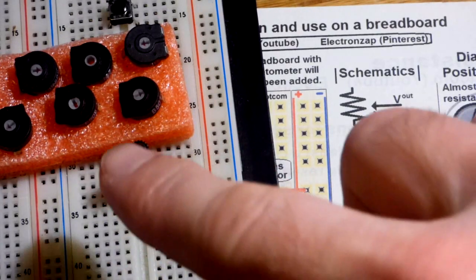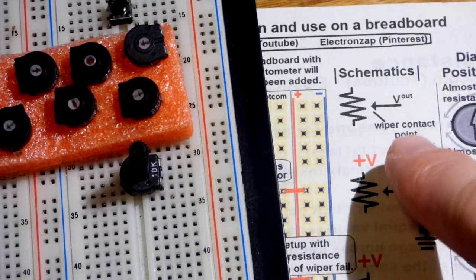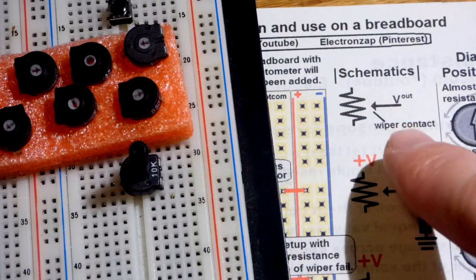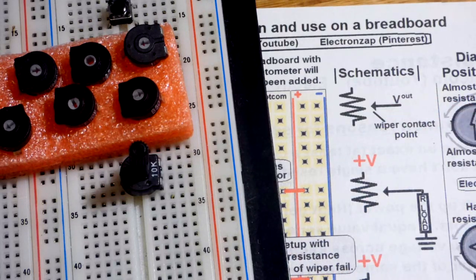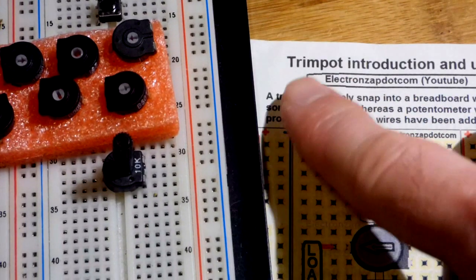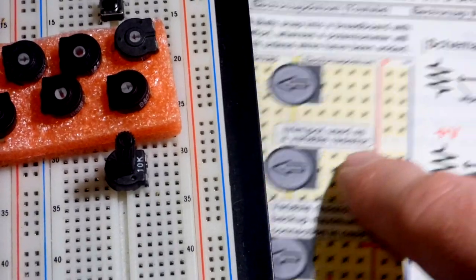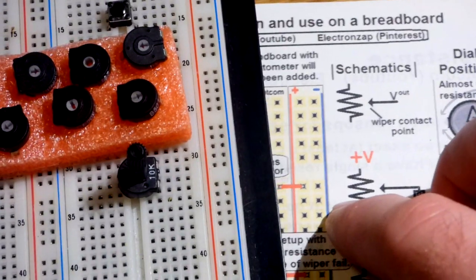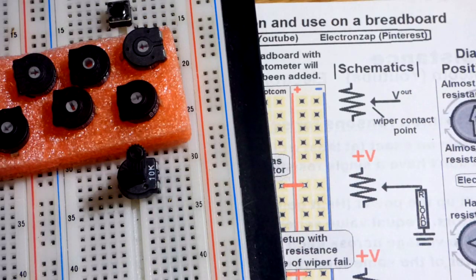Now in this video we're going to look at the trimmer potentiometer. There's the schematic symbol. It's actually a schematic symbol for a potentiometer, which is really the same thing. So you can see a trim pot there is what these components are typically called, trimmer potentiometer.